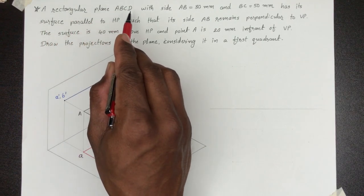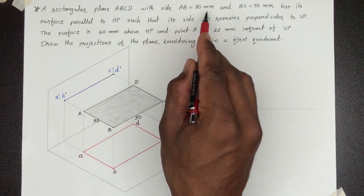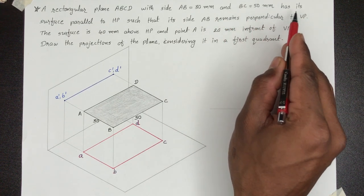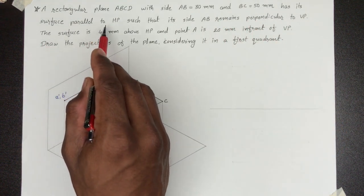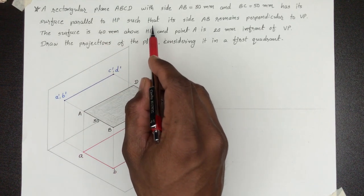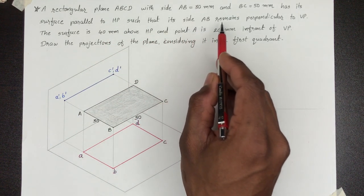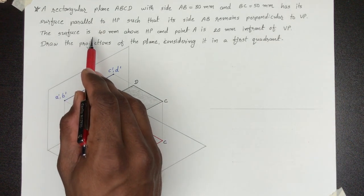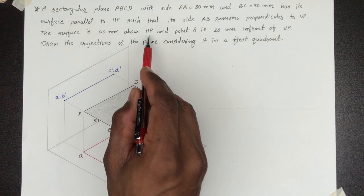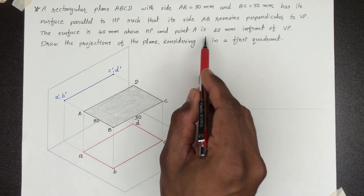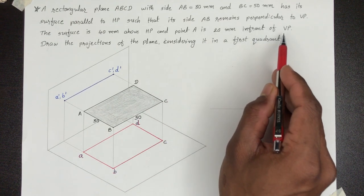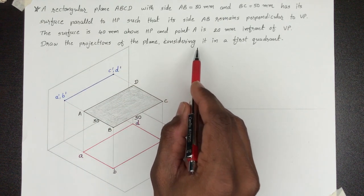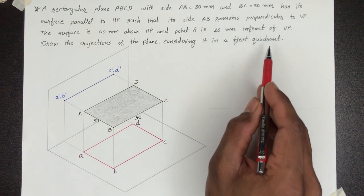A rectangular plane ABCD with AB = 30 mm and BC = 50 mm has its surface parallel to HP, such that its side AB remains perpendicular to VP. The surface is 40 mm above HP and point A is 20 mm in front of VP. Draw the projections of the plane considering it in the first quadrant.